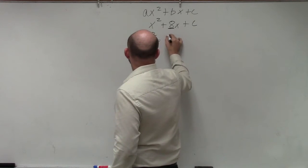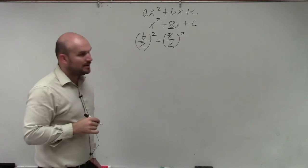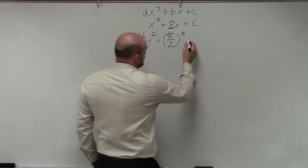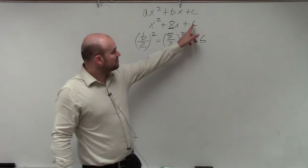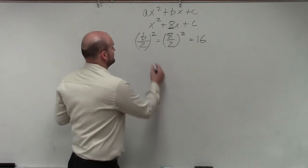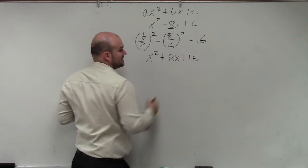So all I'm going to do is take 8 divided by 2 and square it. 8 divided by 2 is 4, 4 squared is 16. So therefore, now I'm going to replace c with 16. So x squared plus 8x plus 16.